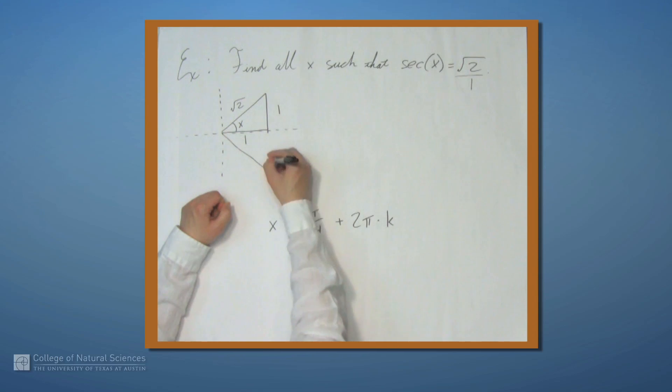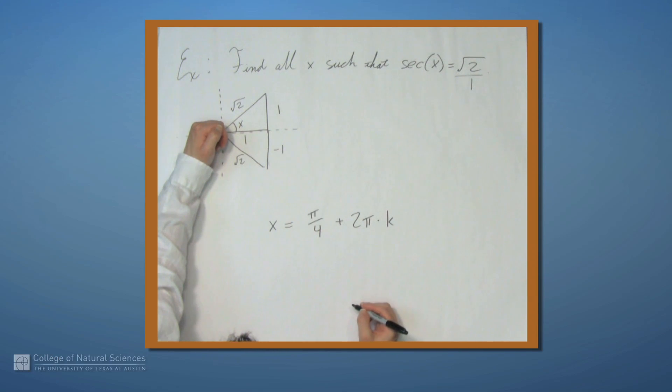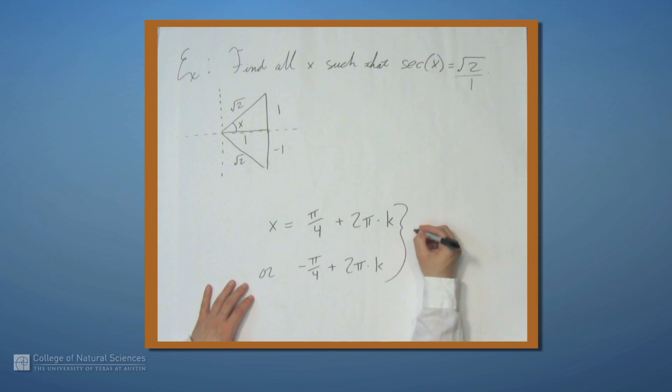So if we draw this triangle, we have negative 1 and square root of 2 and we get a negative 45 degree angle. So x could also be negative π over 4 and similarly plus 2π times k because we can rotate this angle all the way around once or twice or as many times as we want to. So here are two sets of answers where k is any integer. And those are two examples of solving trig equations.